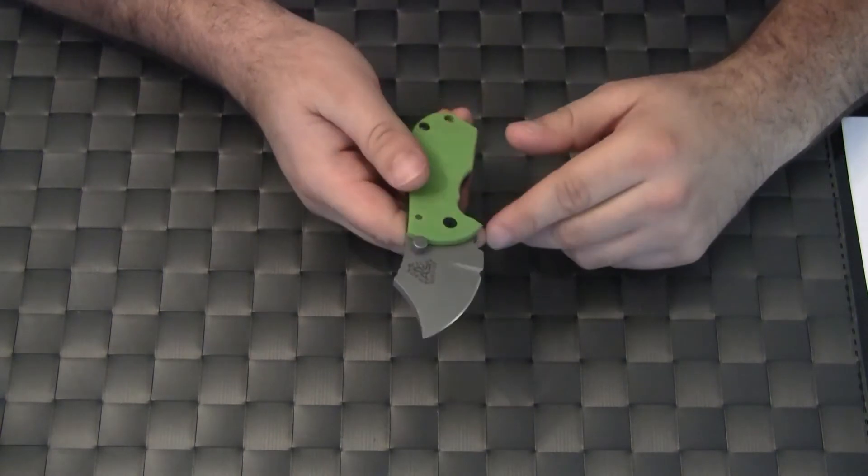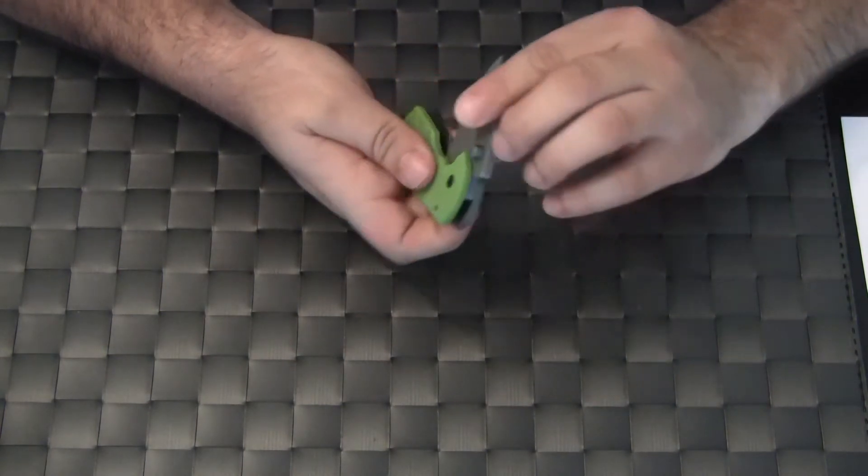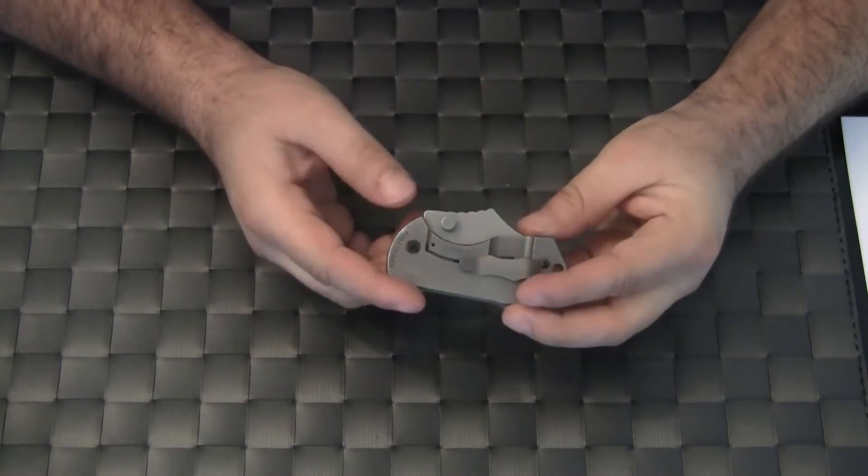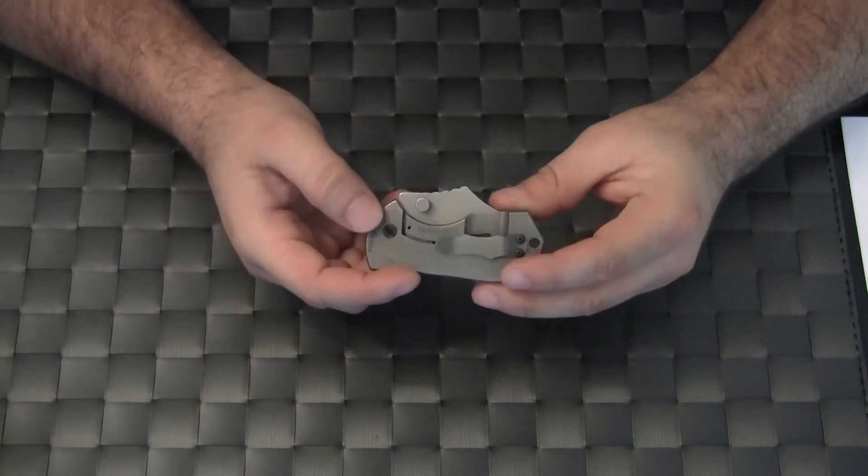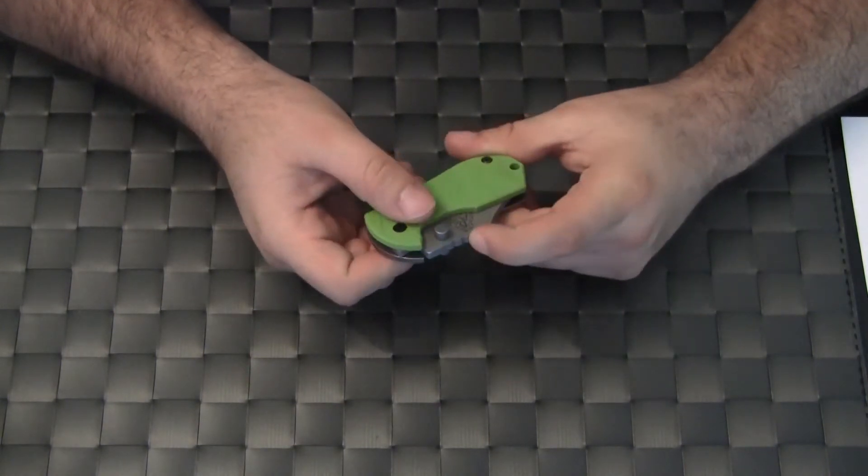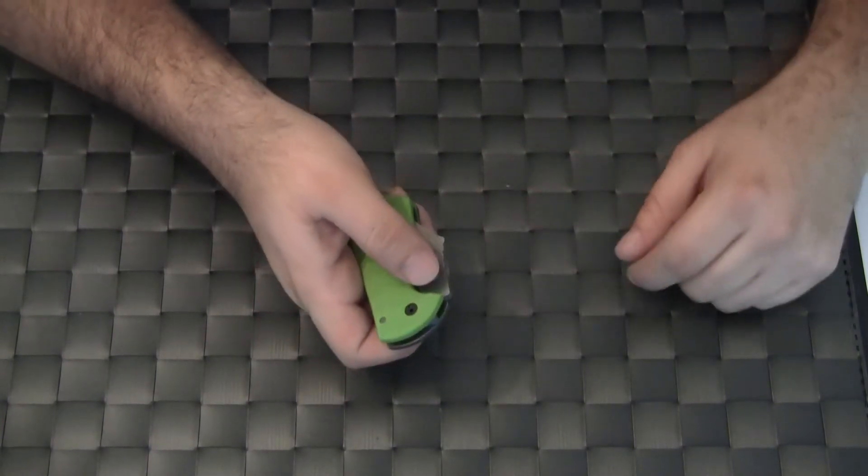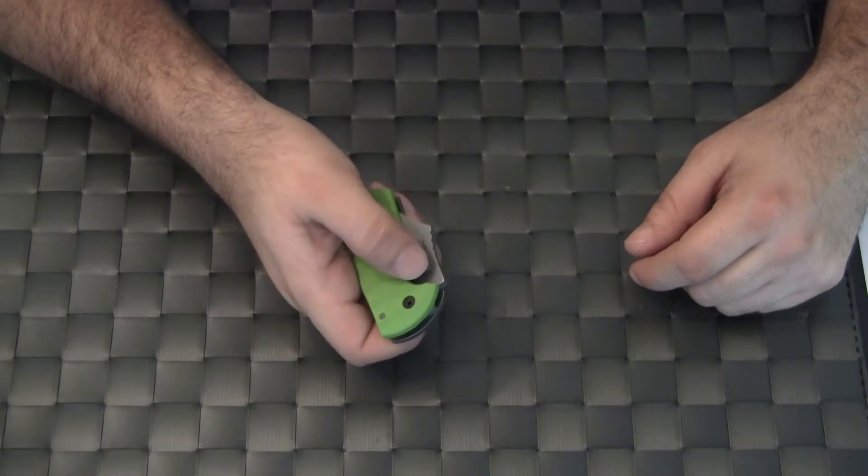You have a large thumb stud on both sides, so if you want it to be ambidextrous, this would be it. Thumb stud here, thumb stud there. It is spaced away from the handle, so when you grip the blade, your thumb naturally goes right to the thumb stud. It is away from the handle, so it is easy to open.